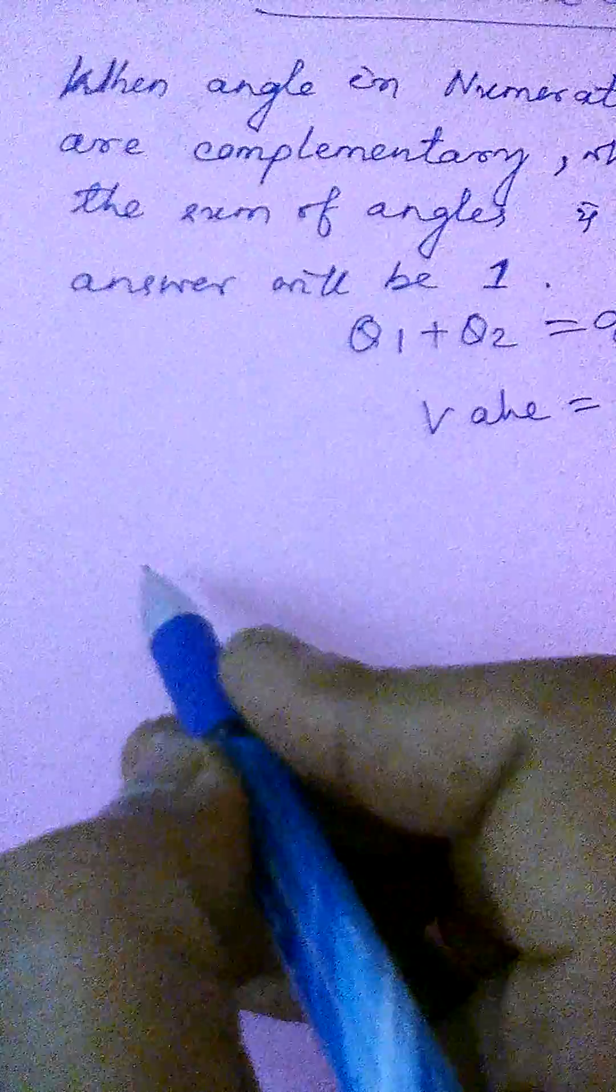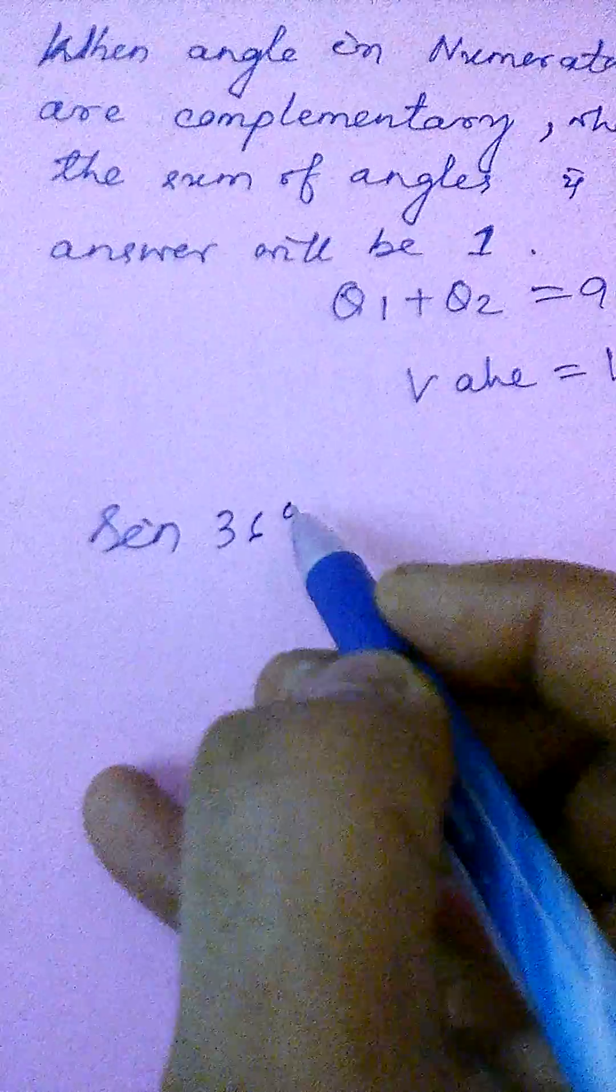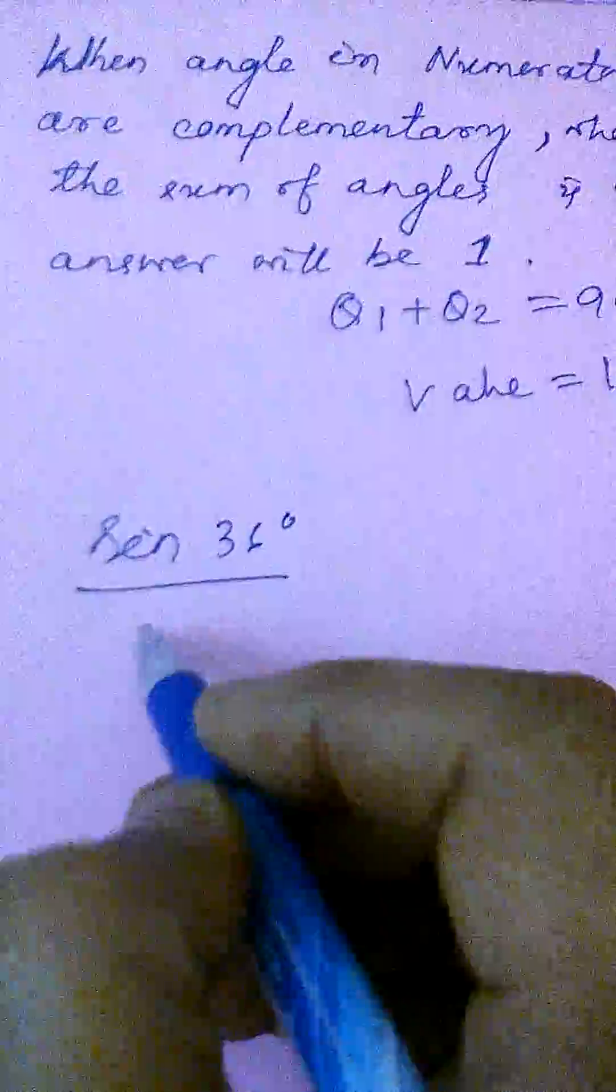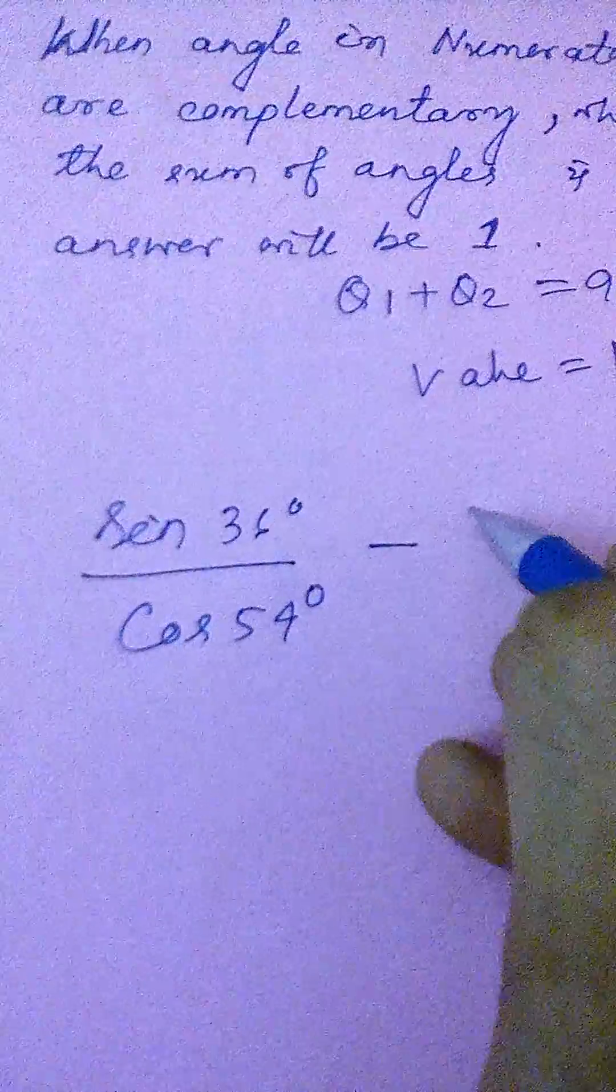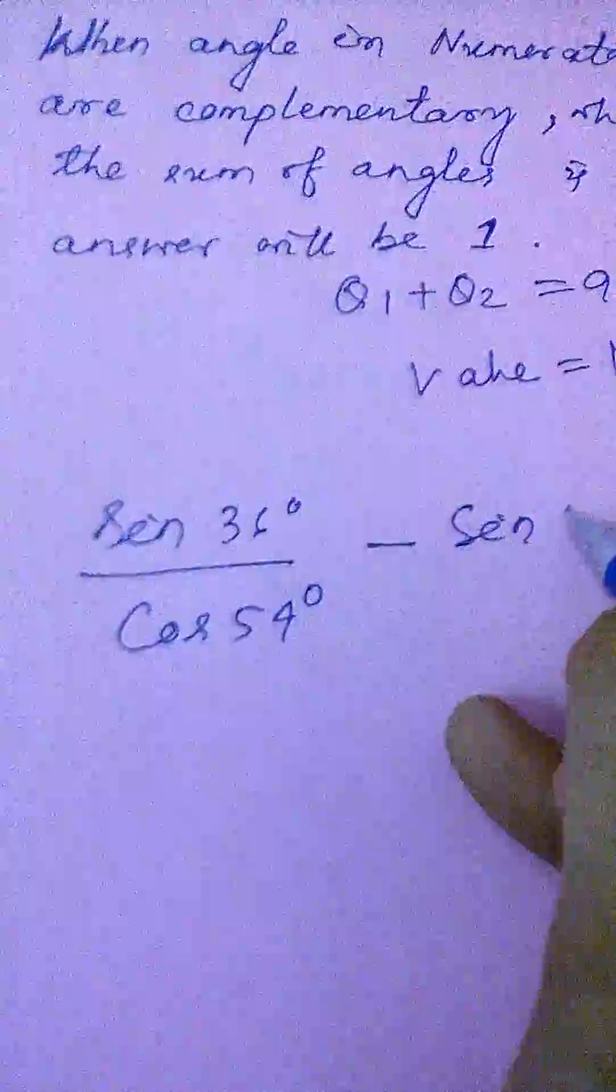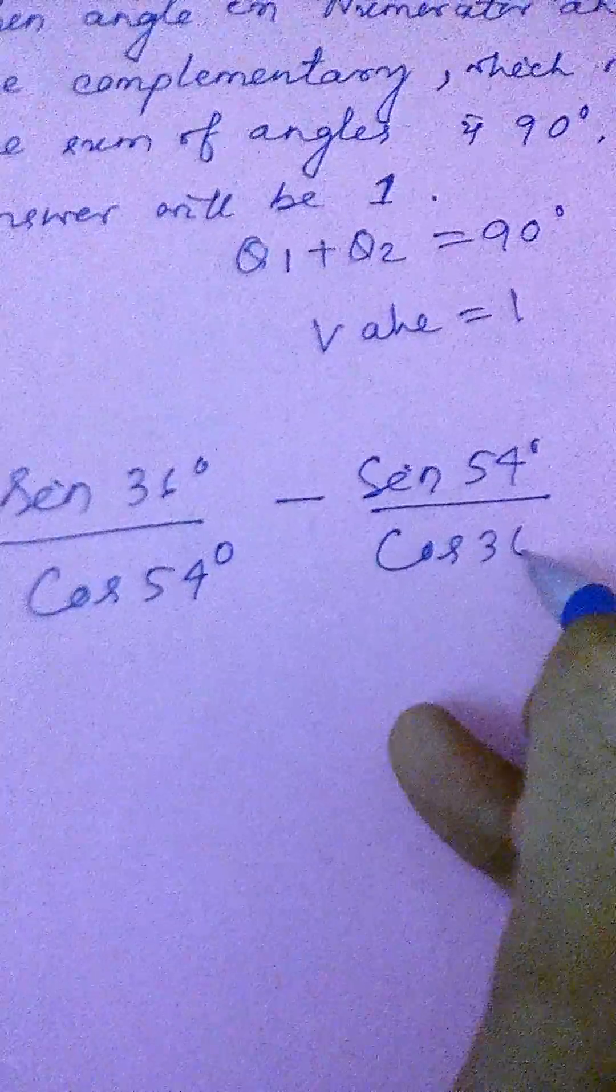Take one example here. Suppose sine 36 degree by cos 54 degree, minus sine 54 degree by cos 36 degree.